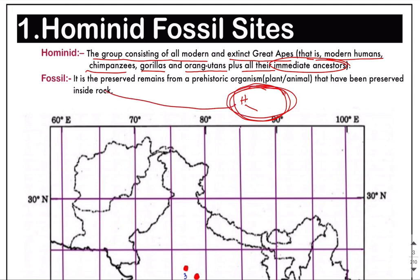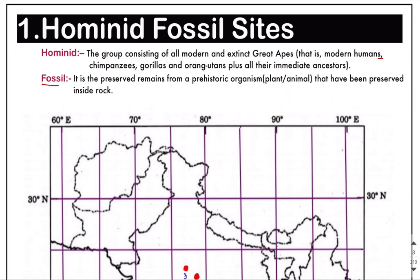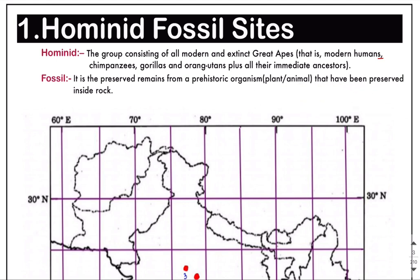Modern human beings, chimpanzees, gorillas, and orangutans, plus all their immediate ancestors - when they are combined, that forms the hominid group. Now, what are fossils? In ancient times, plants and animals died, and sometimes their bodies got preserved in rock-like structures. When living creatures got trapped inside rocks and were preserved over a long period of time, that becomes fossils - the preserved remains of pre-historical organisms.